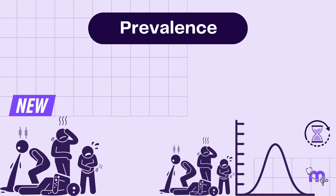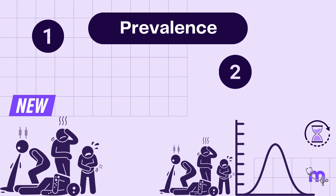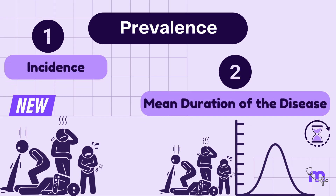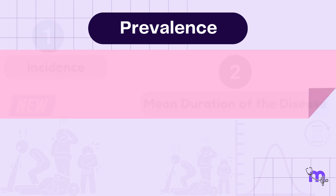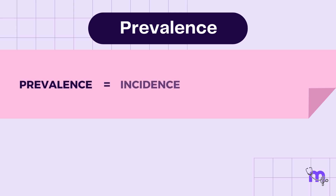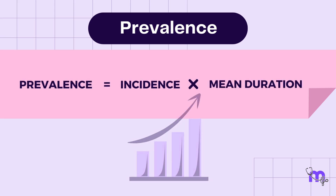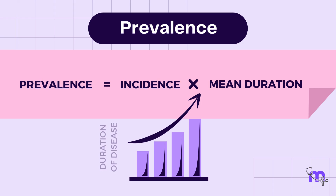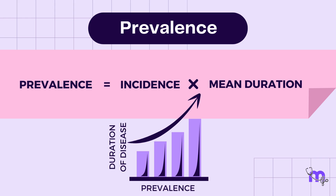Prevalence is dependent on two factors: the incidence and mean duration of the disease. The relationship between the three can be represented as: Prevalence = Incidence × Mean Duration. From this we can see that as the duration of the disease increases, the greater will be the prevalence.